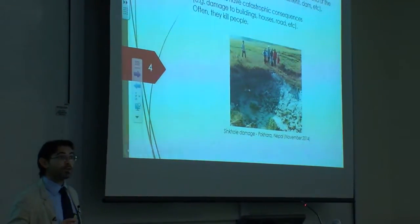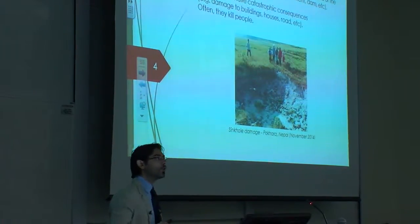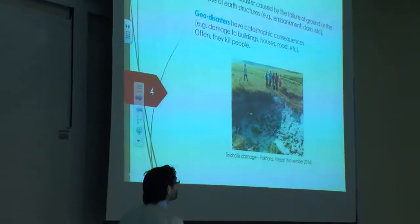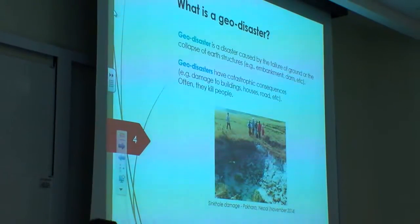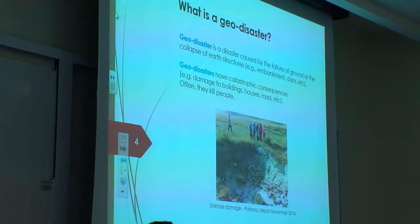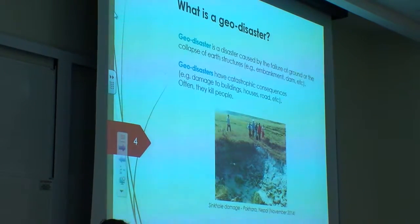So what is a geodisaster? Basically, a geodisaster is a disaster caused by the failure of ground — anything associated with ground failure, or damage of earth structures: structures made with soil, such as embankments or dams. When geodisasters happen, they are catastrophic. They can cause damage to buildings, houses, roads, and unfortunately, they often kill people.